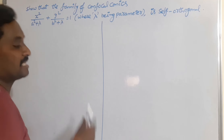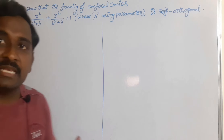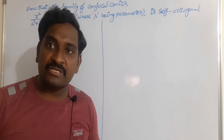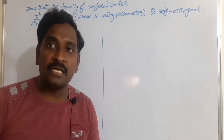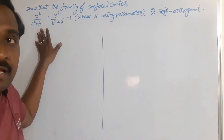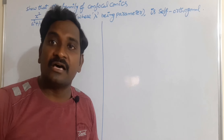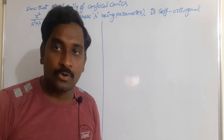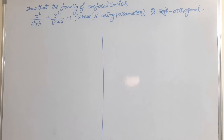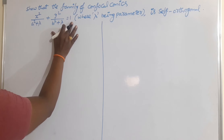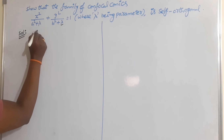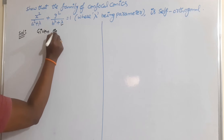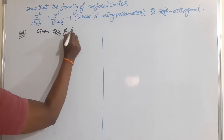We are going to prove this system of confocal conics is self-orthogonal. To show a given system is self-orthogonal, we must prove that the differential equation of the given family and the differential equation of its orthogonal trajectories are the same. First, we have to find the ordinary differential equation of the given family by eliminating the parameter λ.